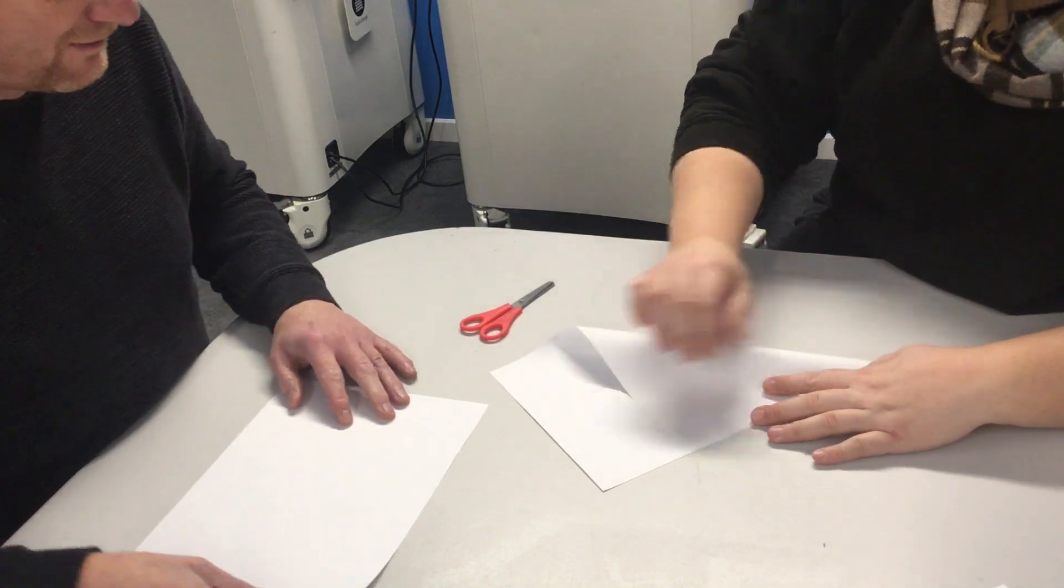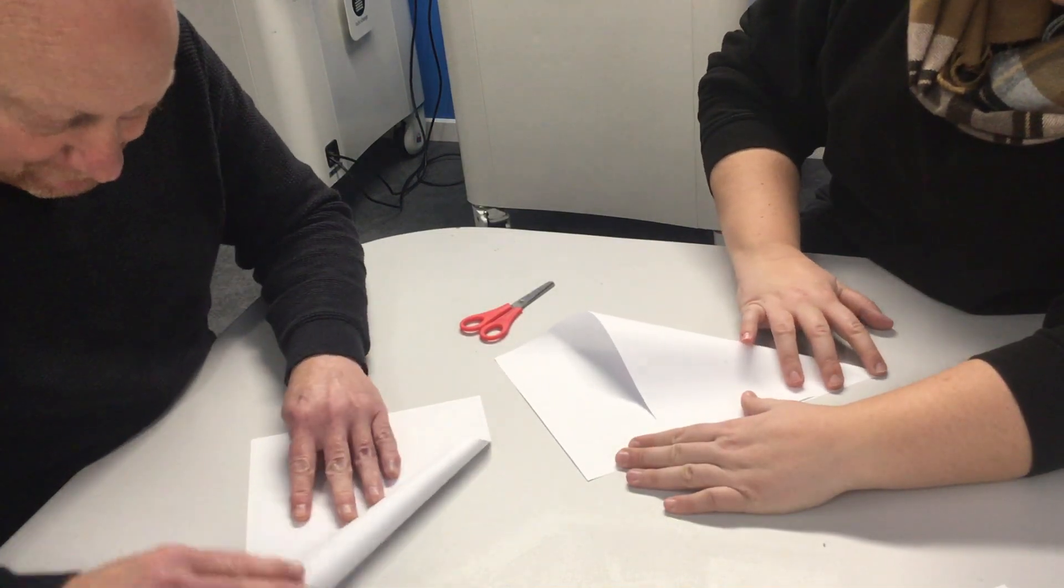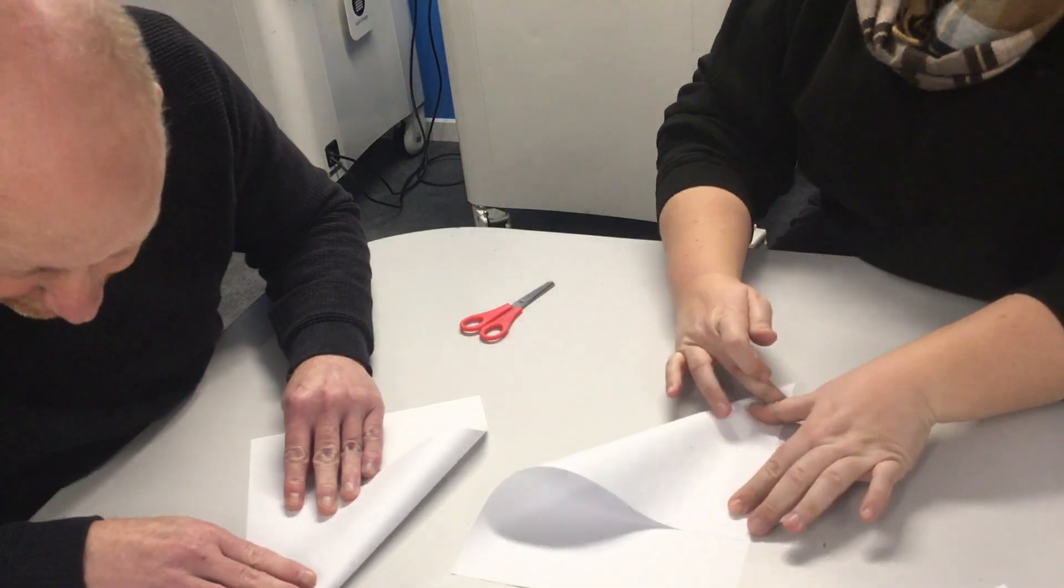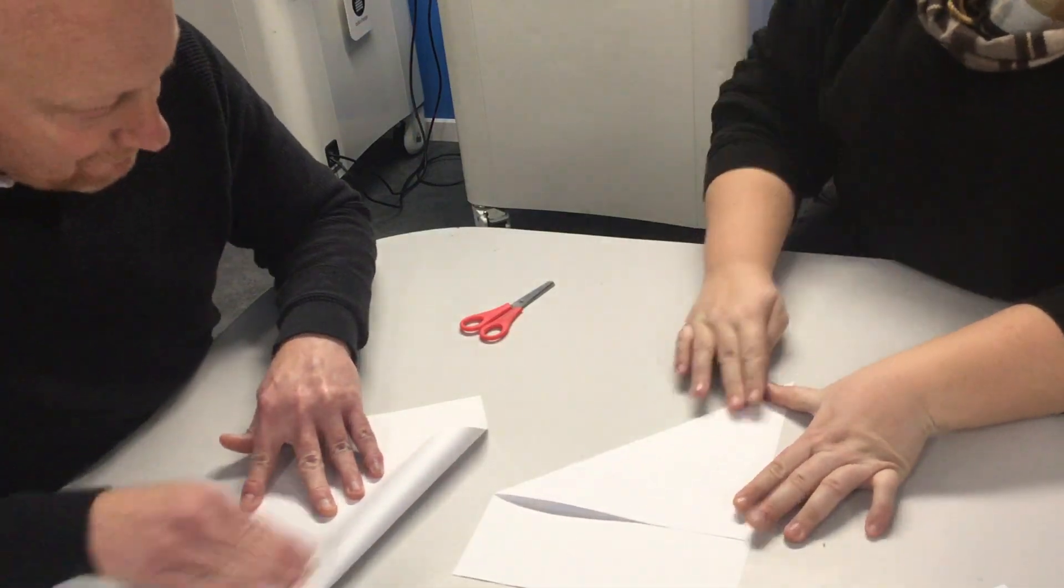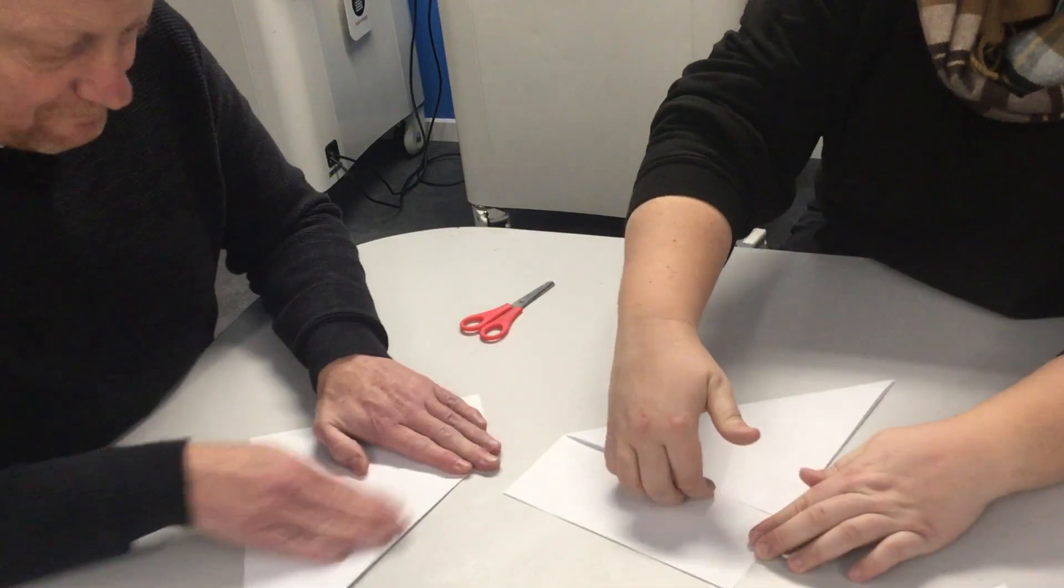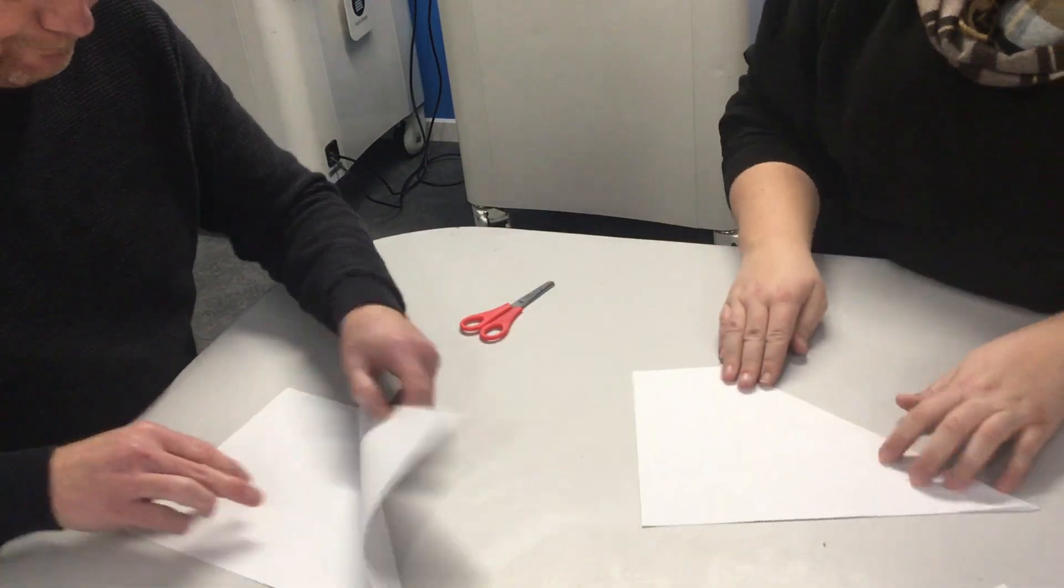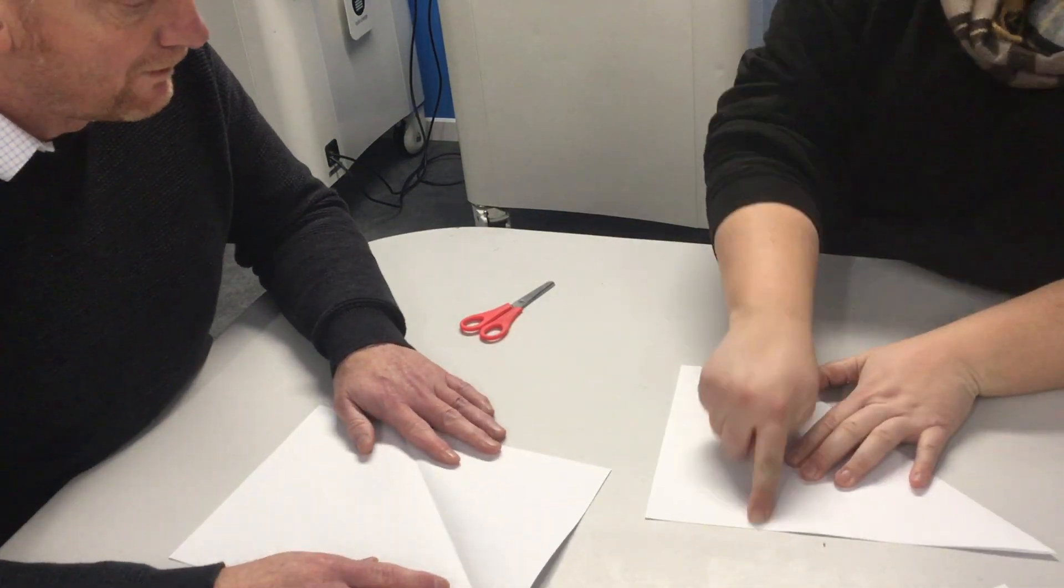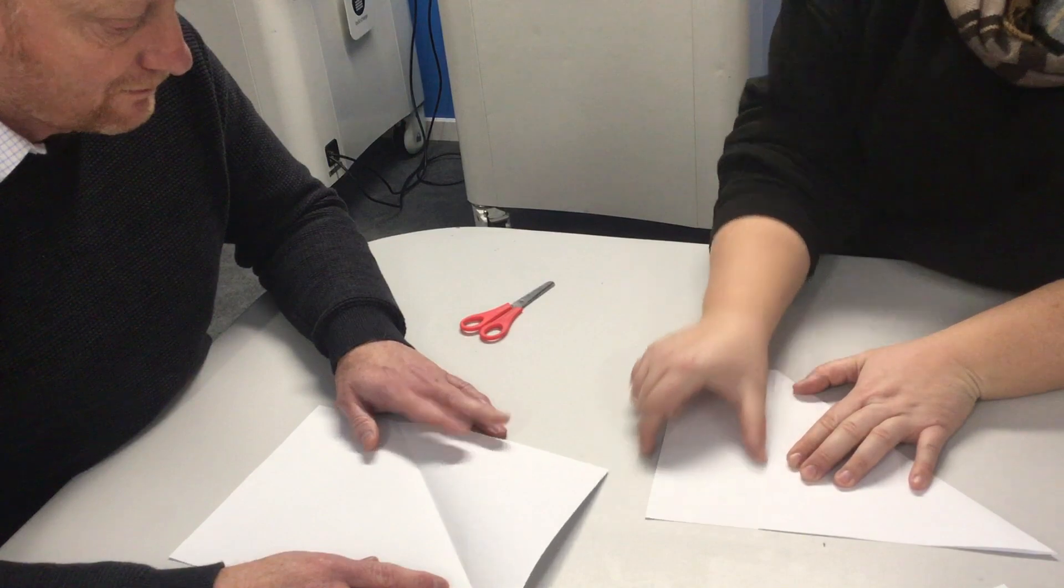So you need to fold in the corner to the point, giving you an exact square when you open it up. And then we would cut along this line to get rid of this rectangle that's left over.